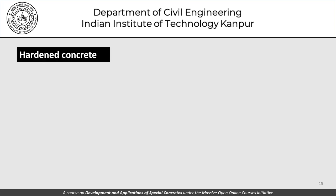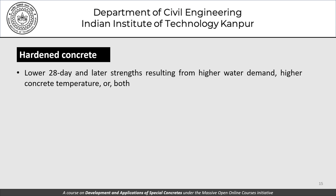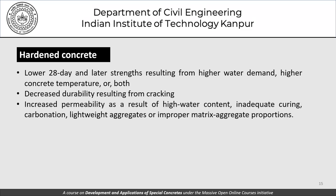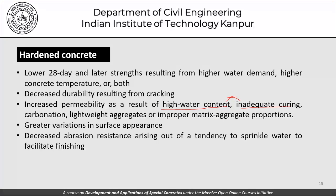Effects on hardened concrete include lower 28-day and later strengths resulting from higher water demand and higher concrete temperature. There is also decreased durability resulting from cracking, increased permeability due to high water content, and issues from inadequate curing, carbonation, or improper aggregate-matrix proportions. High water content and inadequate curing are very critical to the integrity of concrete.